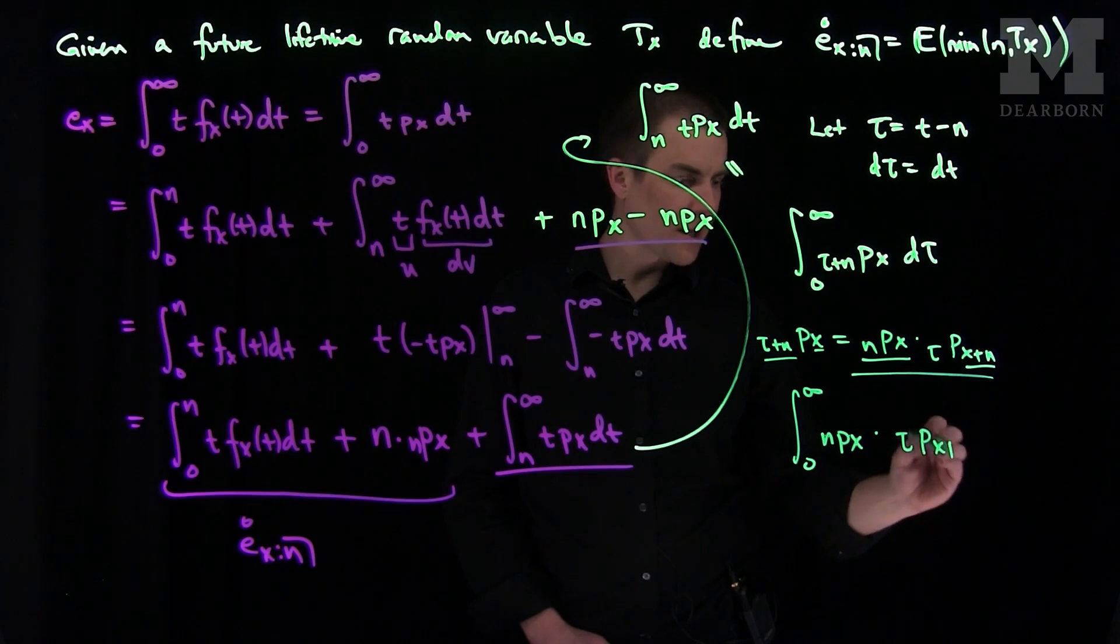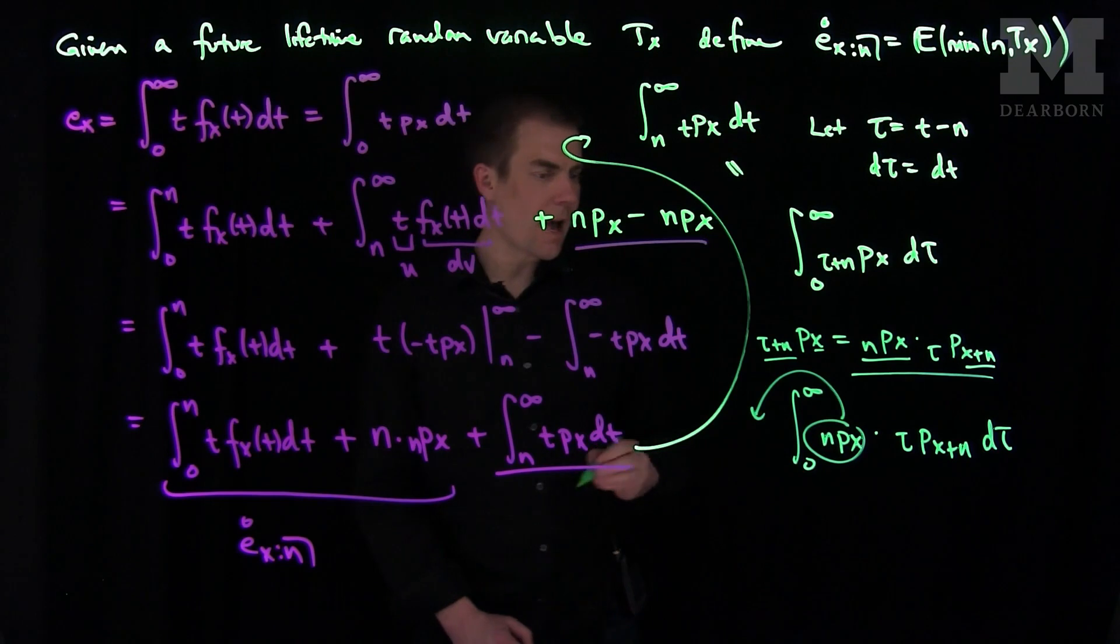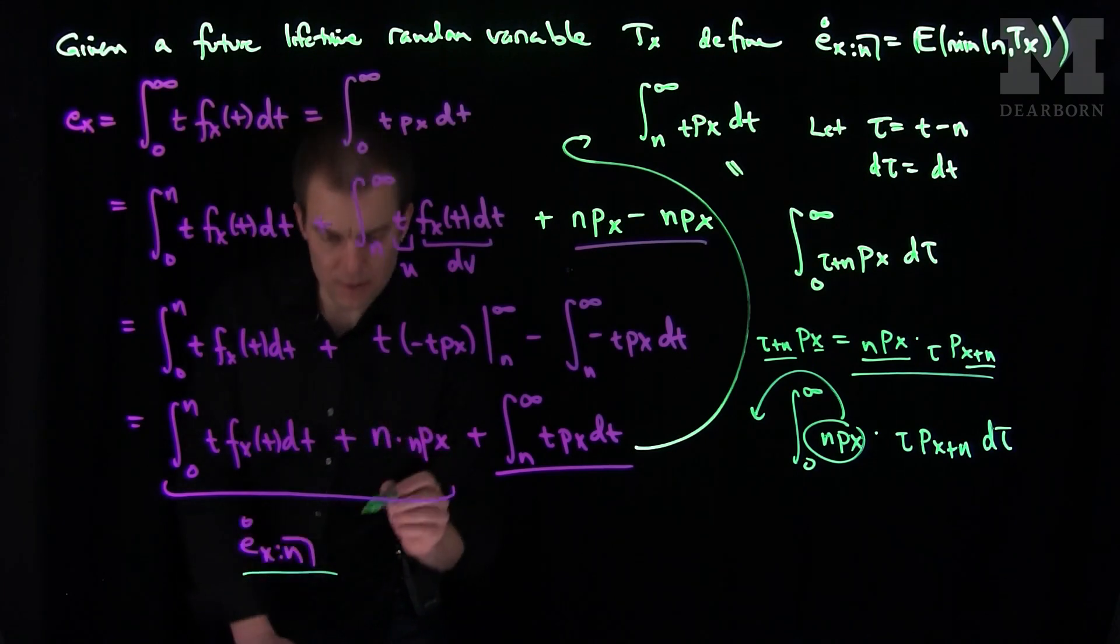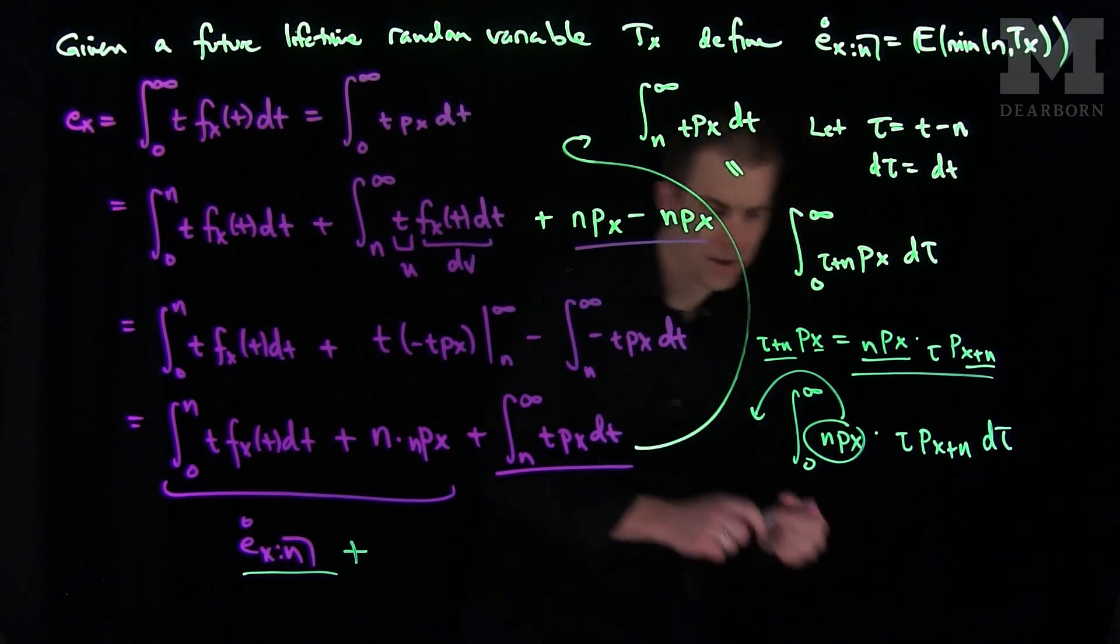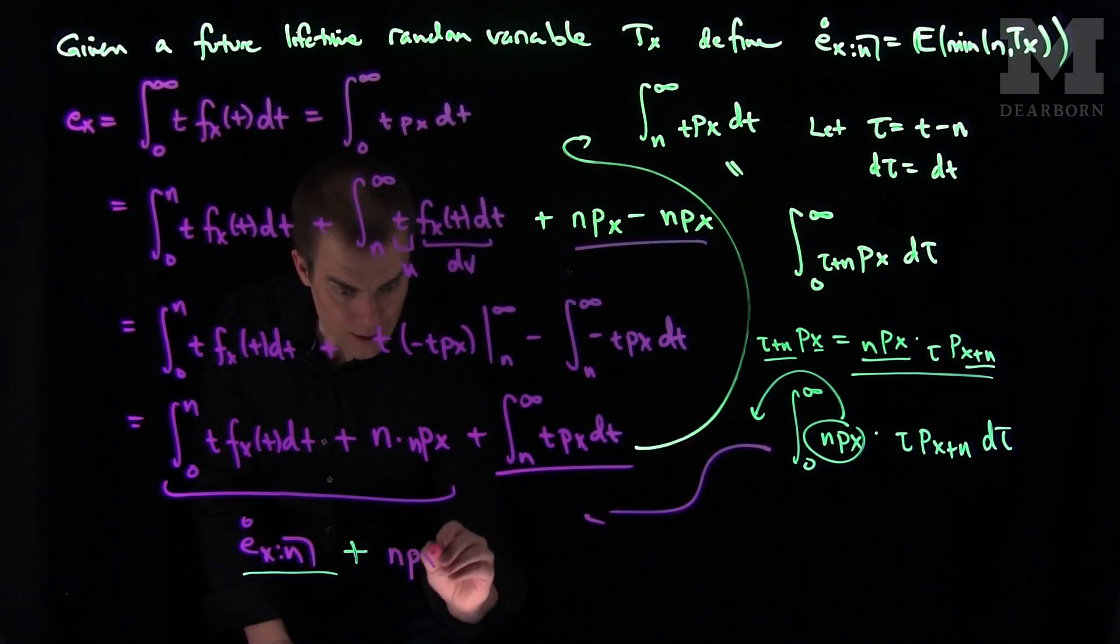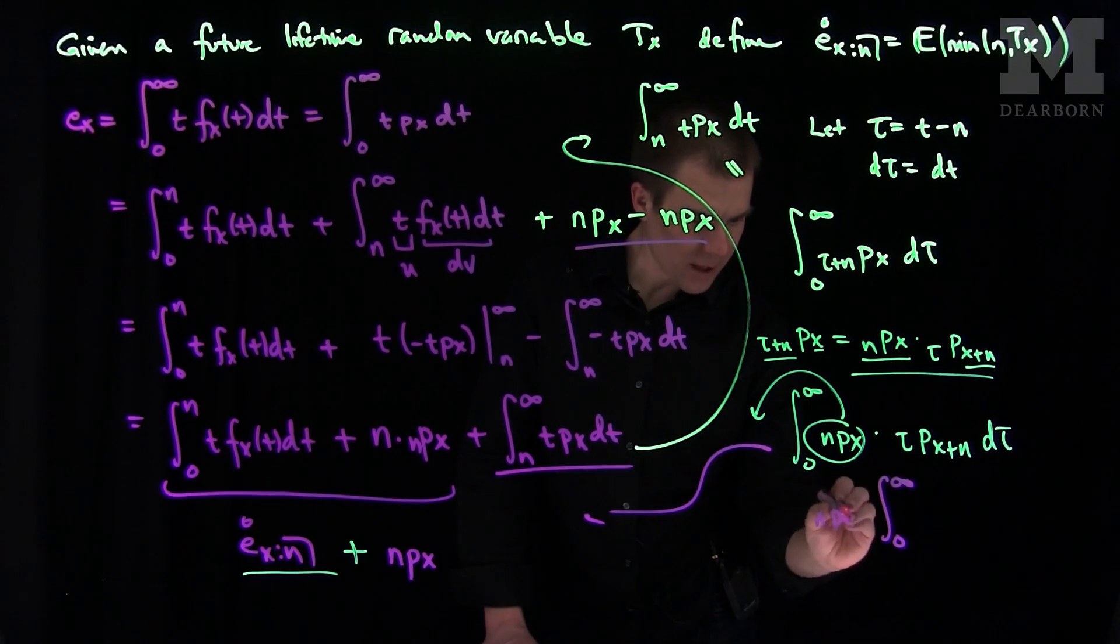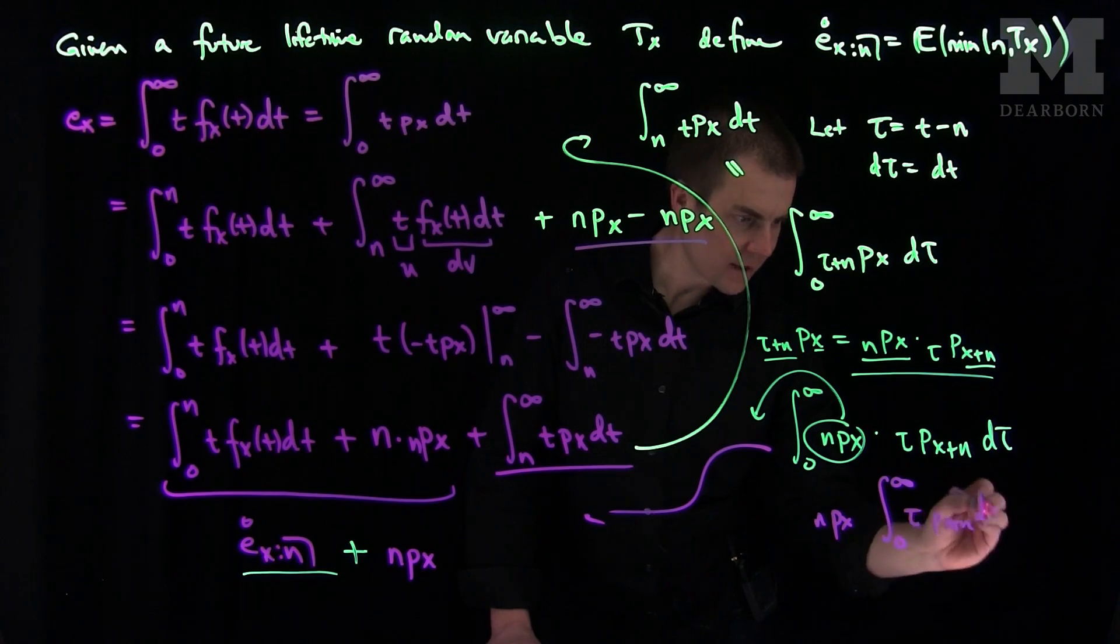I can pull this npx out. And so we see this first integral is exactly the temporary life, plus this npx. And then I'll have the integral from 0 to infinity of npx comes outside. And then I'll have tau px plus n dtau.